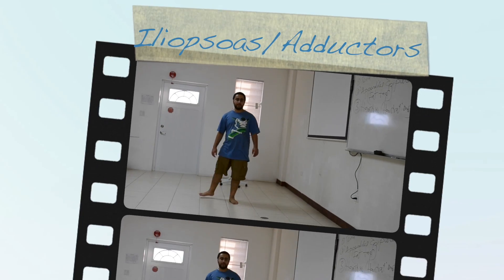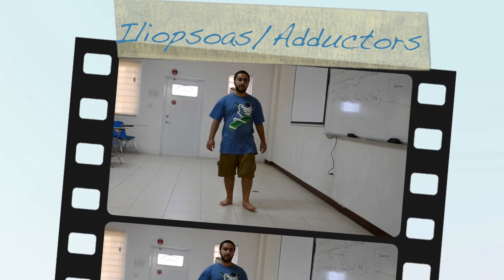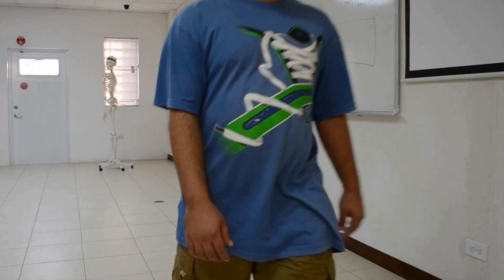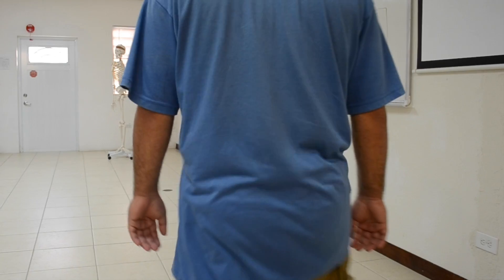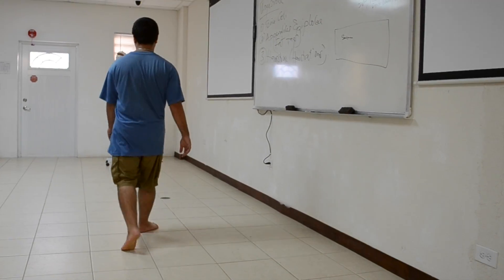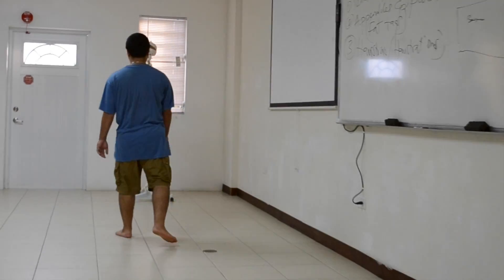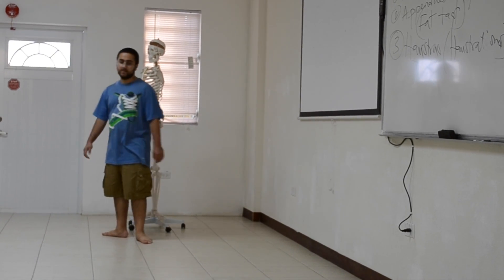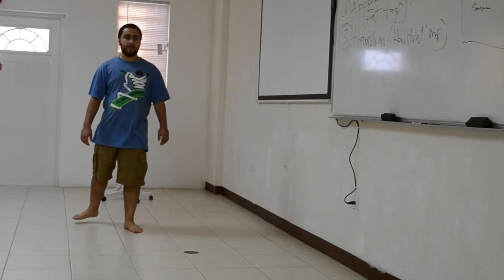The iliopsoas and the adductors slow down the extension of the hip at the end of stance phase and initiate flexion of the hip at the beginning of the swing phase. When the adductors are paralyzed, flexion of the hip on the affected side is accompanied by hip and thigh abduction.